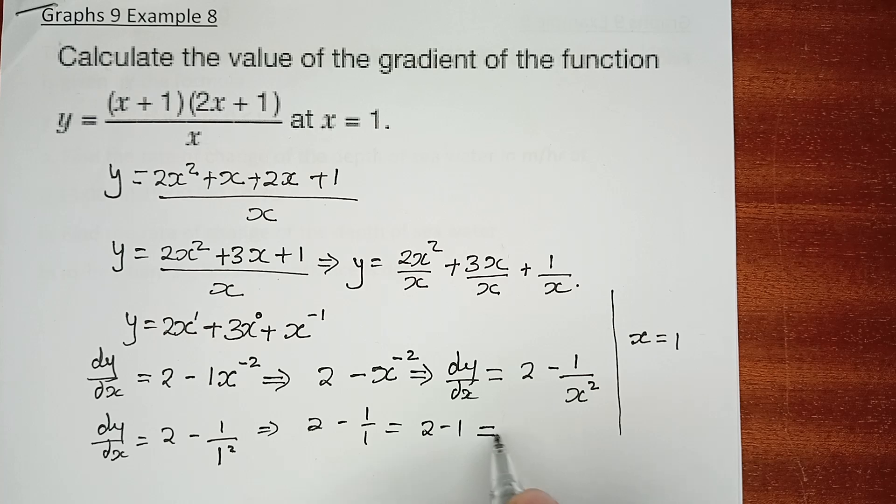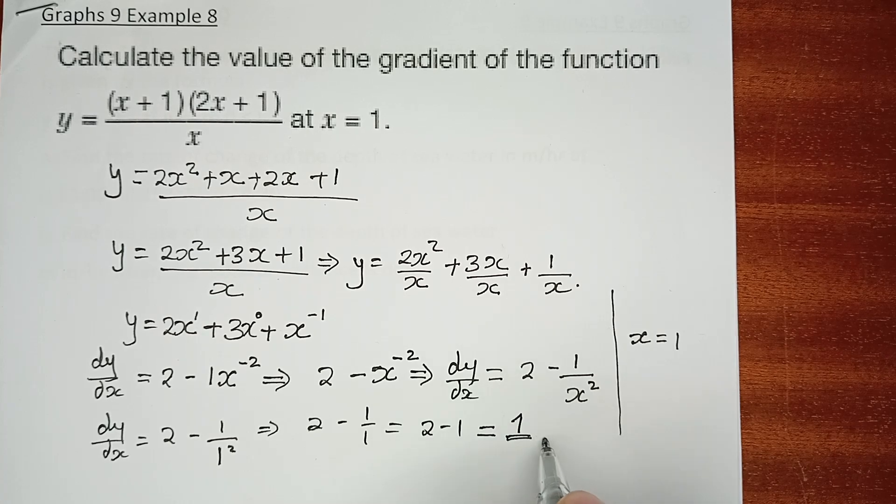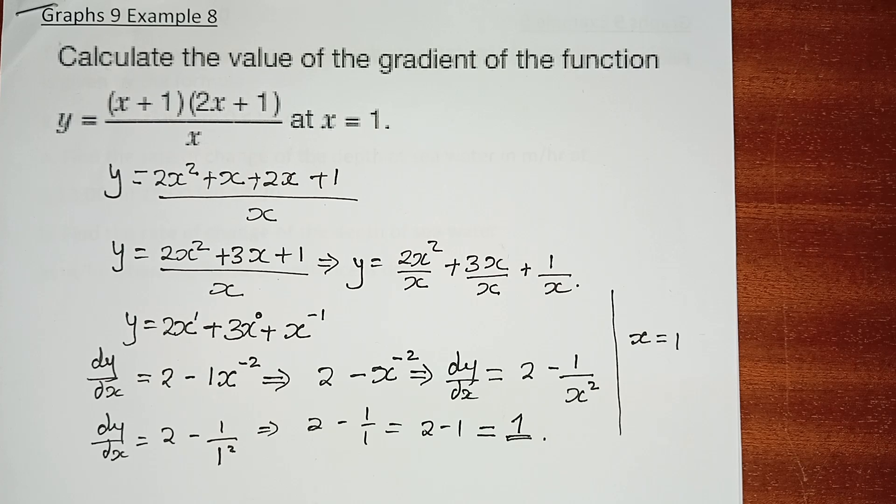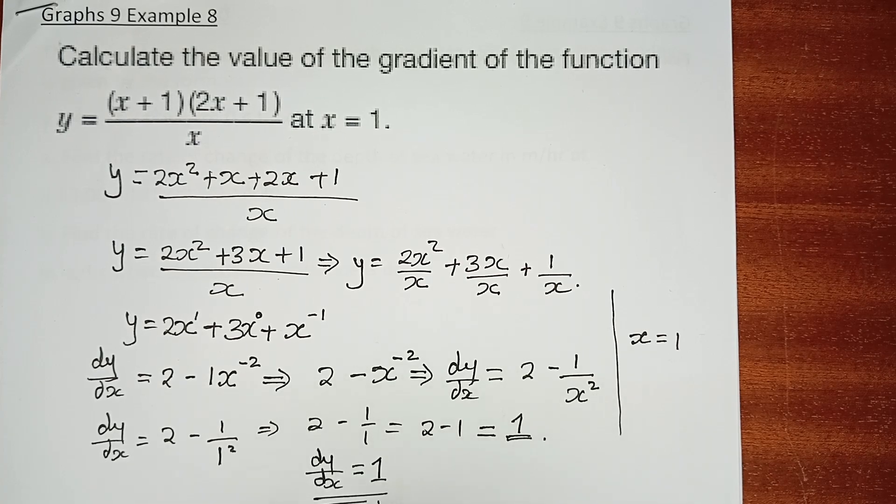Which means 2 minus 1, which gives us 1. So the gradient, the dy/dx of this function at the point where x is equal to 1, we have dy/dx is equal to 1, and that is now what we have found.